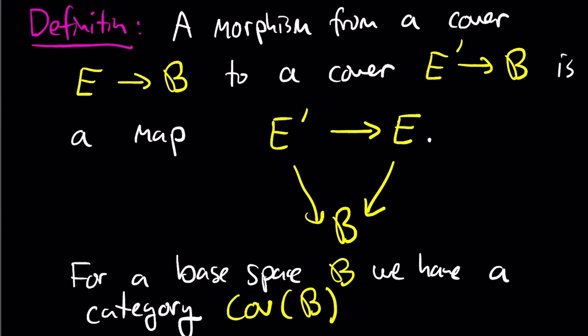In my notes I've drawn E prime to E, but it should go from E to E prime. So for a fixed base space B, you have a category called covers of B, where the objects are covers E over B and the morphisms are morphisms between covers.